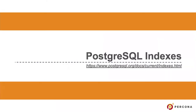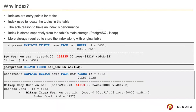We've now covered the concept of heap and how data is read. Indexes are entry pointers for the table. You go to the index, get the value, get the pointer, and go back to the table to extract tuples from it. There are some exceptions — cases where you are not going back to the heap — which I'll cover at the end of this presentation.